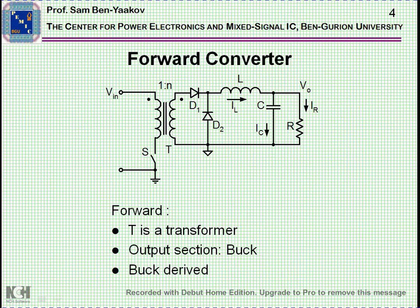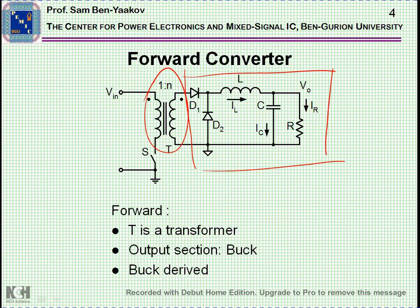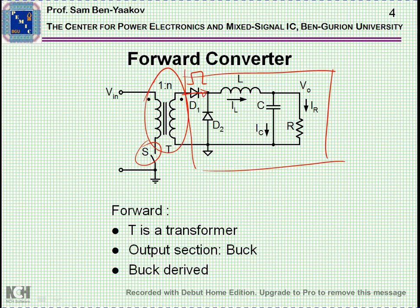I'm showing here just the energy transfer section. There's another section we'll have to deal with — that is the reset of the transformer, which I'll talk about later. What we have here is a transformer and then this output section, which for those familiar with other DC-to-DC configurations, is actually a buck converter. Because we have a pulsating voltage coming in when the switch is on, the operation is very similar. The current will charge the inductor, and then the inductor will discharge into the output. This is called a buck-derived topology.